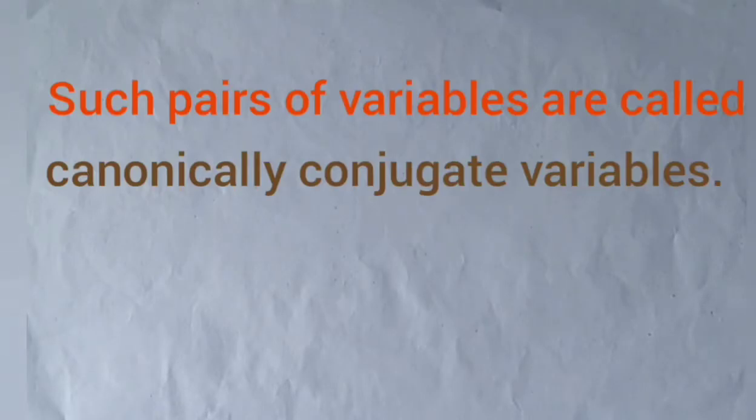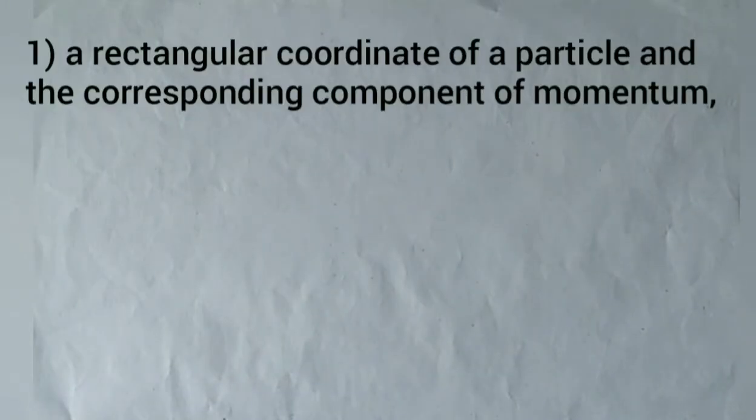Such pairs of variables are called canonically conjugate variables.